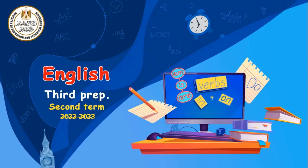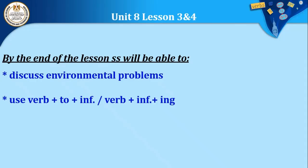Dear students of preparatory Egypt, today, inshallah, we are going to discuss Unit 8, Lessons 3 and 4. By the end of the lesson, students will be able to discuss environmental problems, and use verb plus 'to' plus infinitive, or verb plus infinitive plus '-ing'. Let's start.